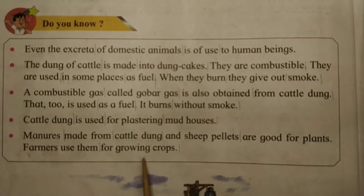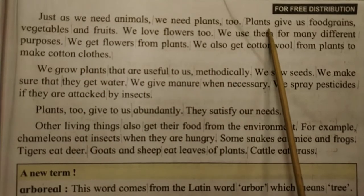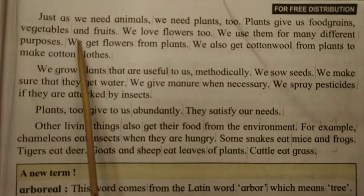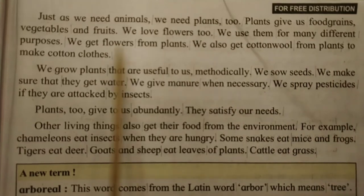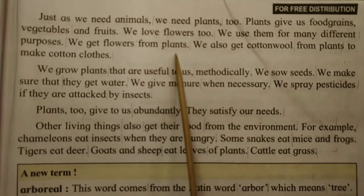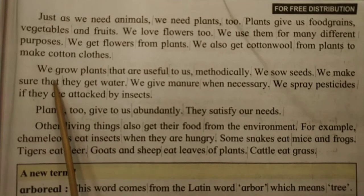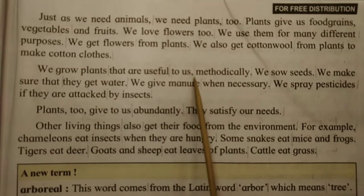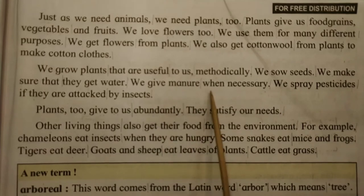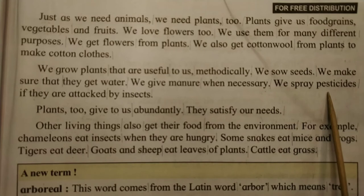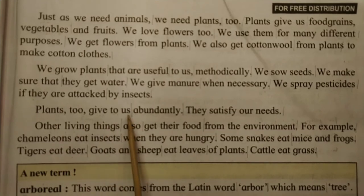Farmers use manure for growing crops. Just as we need animals, we need plants too. Plants give us food grains, vegetables and fruits. We love flowers too and use them for many different purposes. We also get cotton wool from plants to make cotton clothes. We grow useful plants methodically — we sow seeds, make sure they get water, give manure when necessary, and spray pesticides if they are attacked by insects.